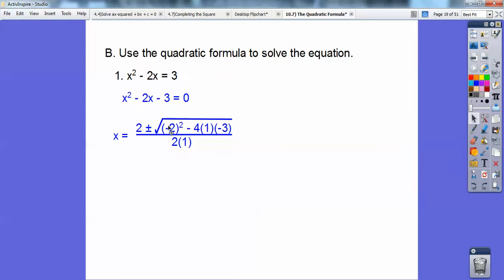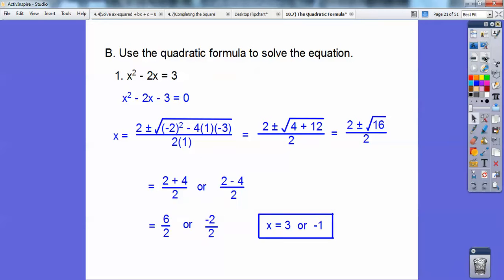So here we go. x equals opposite b, so it's positive two, plus or minus b² minus 4ac all over 2a. Crank all of that out, you guys, and you should get a square root of 16 in there, which is four. So it becomes two plus or minus four all over two, which is two plus four over two, two minus four over two. And it comes out to being three or negative one.